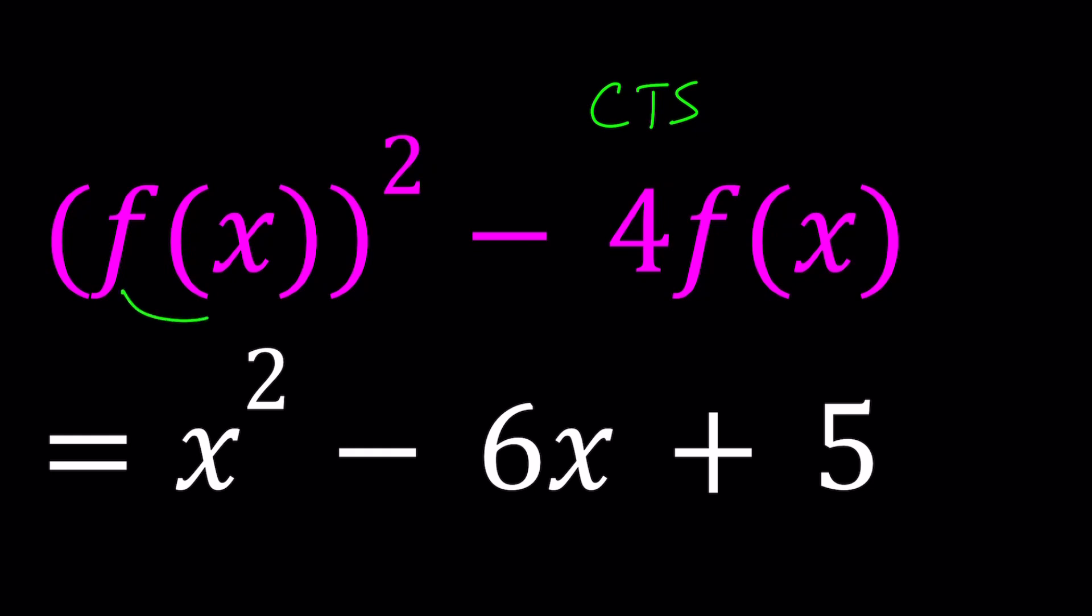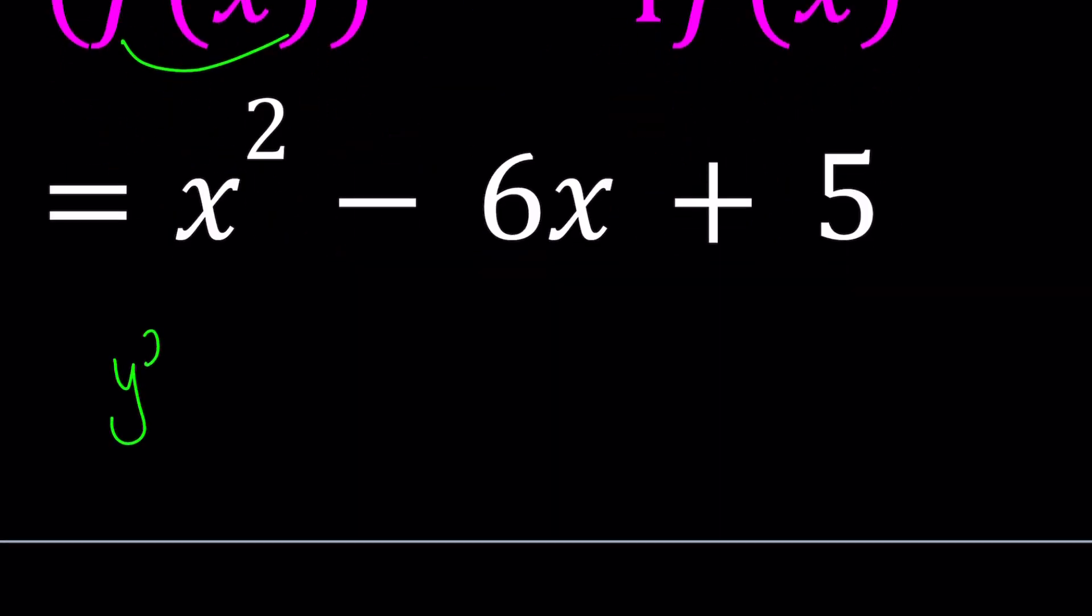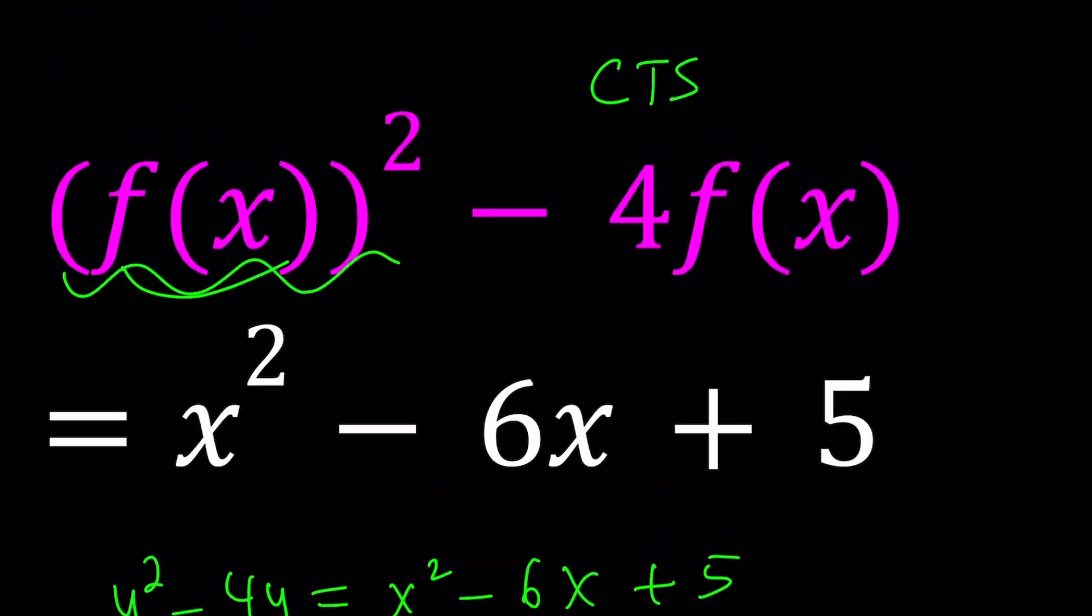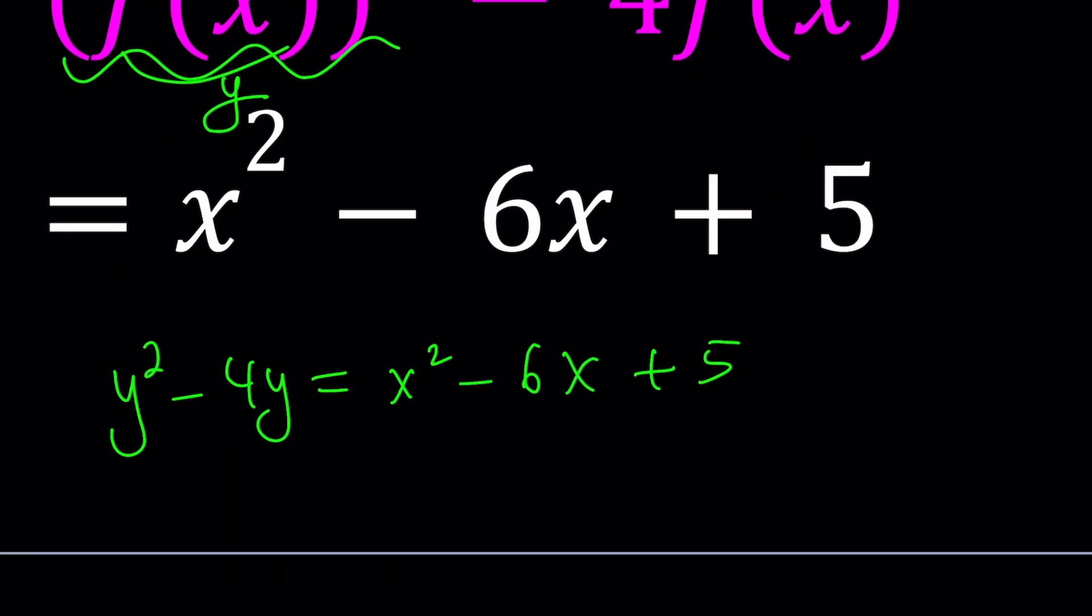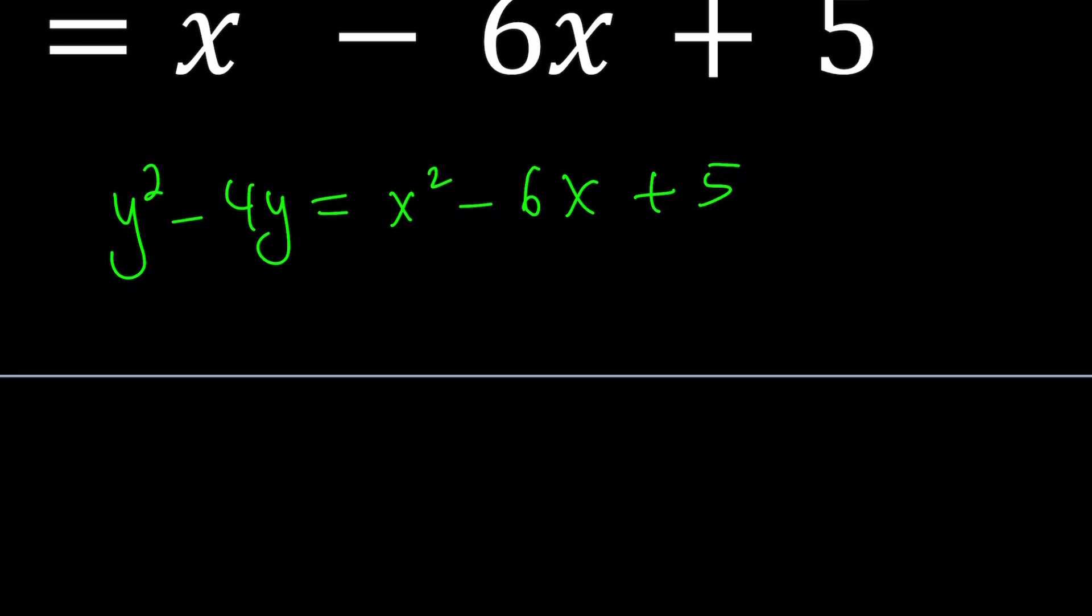Think about f of x as y, so we get y squared minus 4y equals x squared minus 6x plus 5. Now, replacing f of x with y is actually helpful. It kind of simplifies the process a little bit. Now, here's what we're going to do.